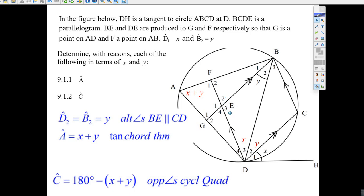But D₁ equals x, D₁ equals x right here, and B₂ equals y, so we need to know that. Now determine A in terms of x and y. Let's try this here.